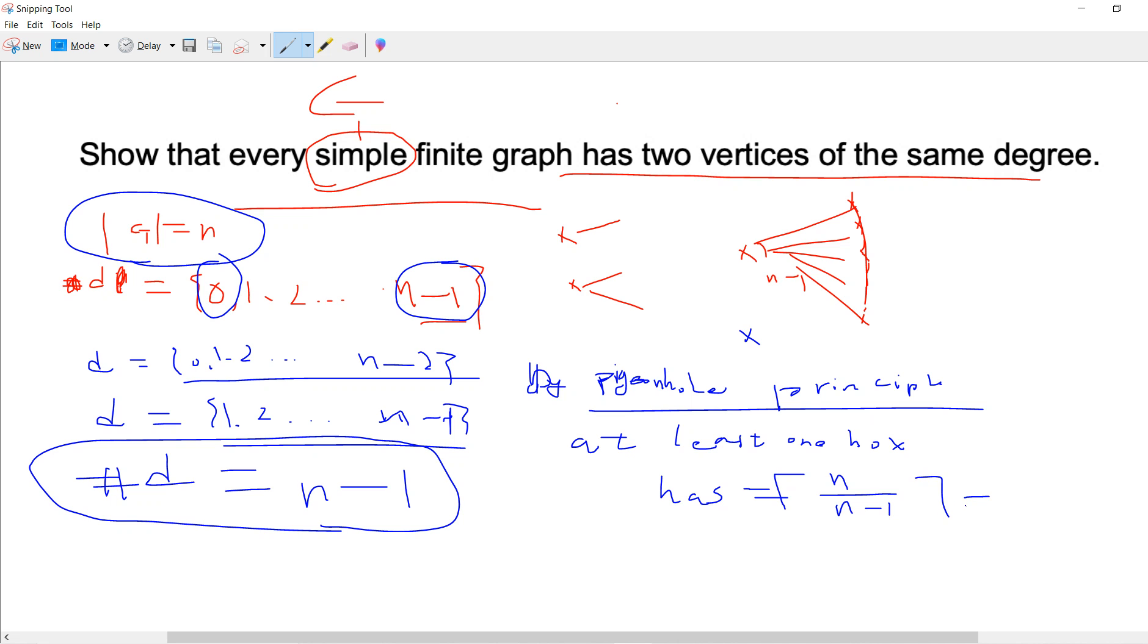So this is 2. So that means at least some box contains 2 vertices. And at that box, this is a degree box.